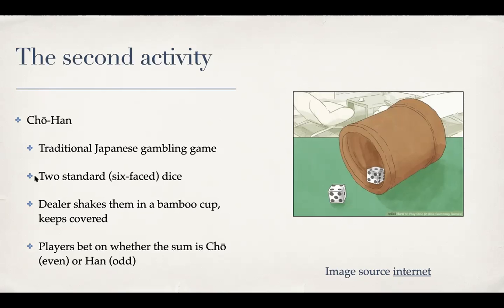You can find more on Wikipedia. Briefly, it uses two standard six-sided dice, and the dealer plays against multiple players at the same time. The dealer puts the two dice in a bamboo cup, shakes the cup, and puts it down covered. Players then place bets on whether the sum of the dice will be even — Cho in Japanese — or odd, which is Han in Japanese. Then the dealer reveals it, and based on whatever bets people have placed, they win or lose the money.